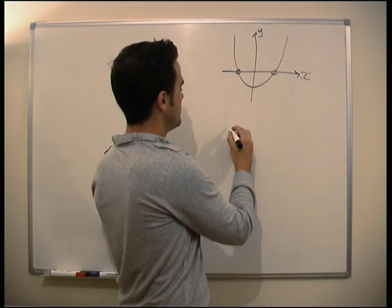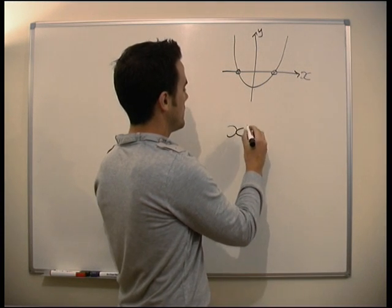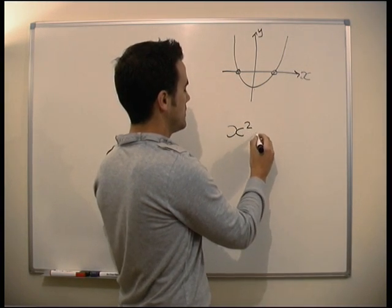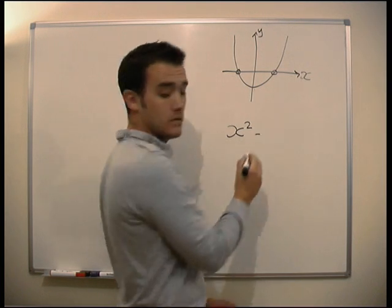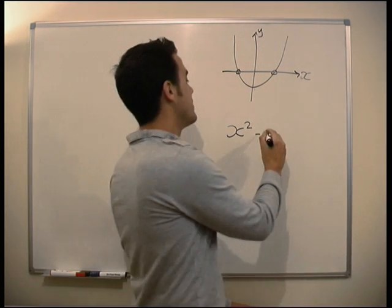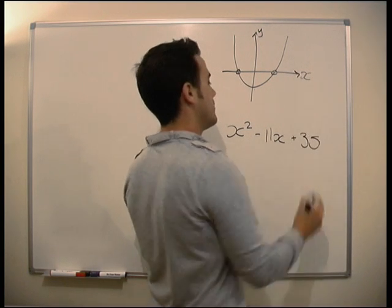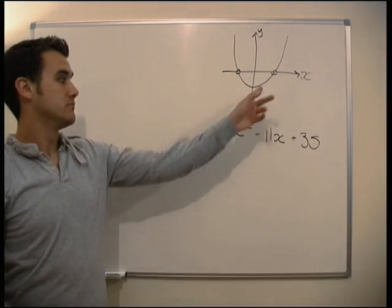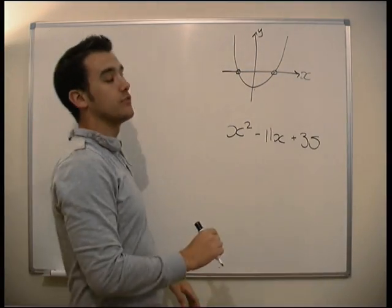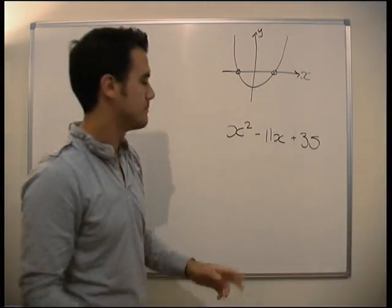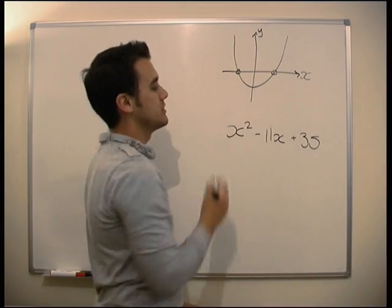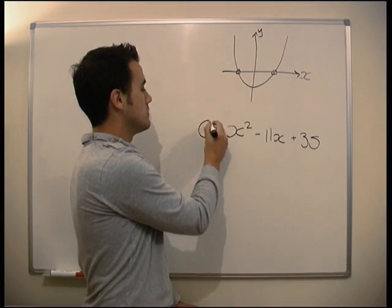This time we're going to do x squared minus 11x plus 35. That's not going to be this. It's going to be a slightly different graph. But it's going to look roughly the same. Again, we're finding the points where it crosses the x-axis.